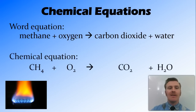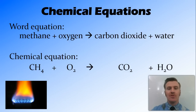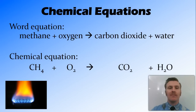We can take our word equation and use the chemical formula for each substance to create the chemical equation. So we have methane, CH4, plus oxygen, O2, which goes to form carbon dioxide, CO2, and water, H2O. Now we have our chemical equation.